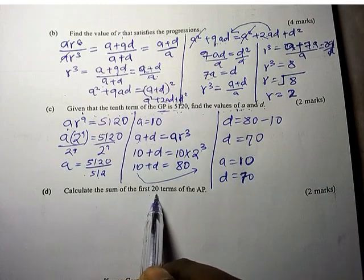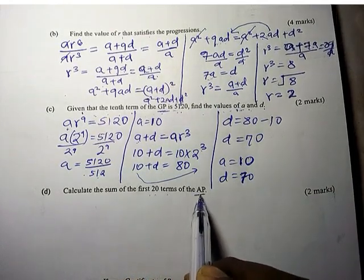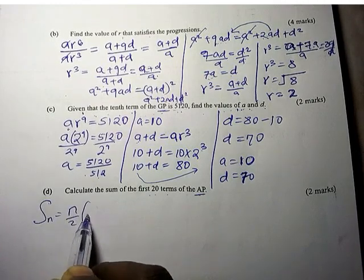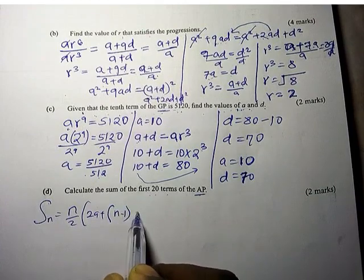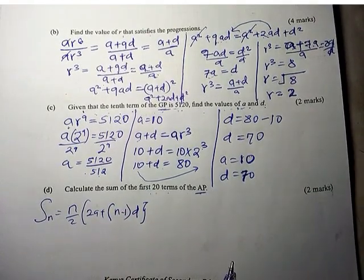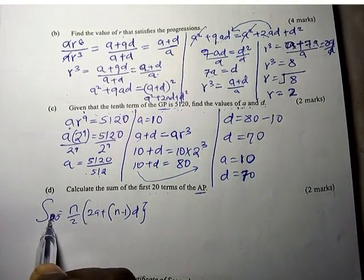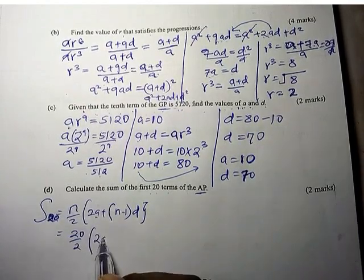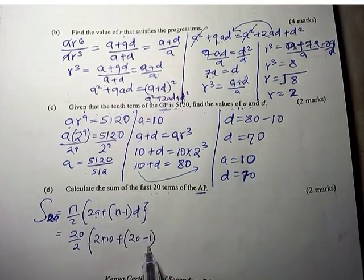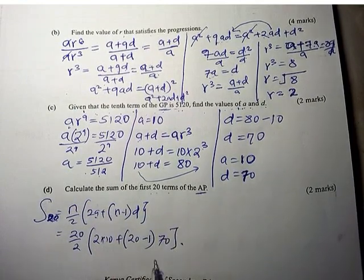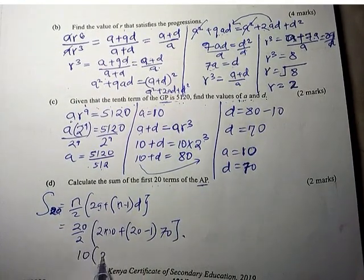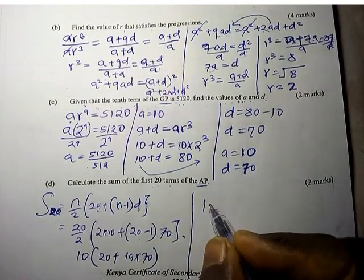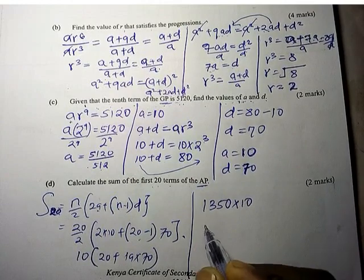Calculate the sum of the first 20 terms of the AP. The sum formula is Sₙ = N/2 × (2A + (N−1)D). For N = 20: S₂₀ = 20/2 × (2×10 + 19×70) = 10 × (20 + 1330) = 10 × 1350 = 13,500.